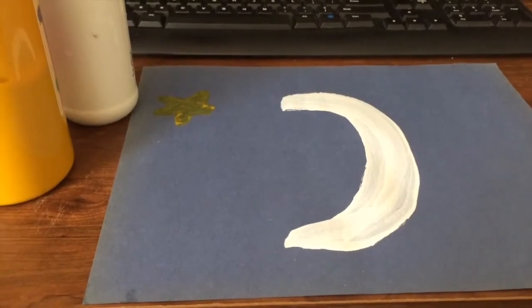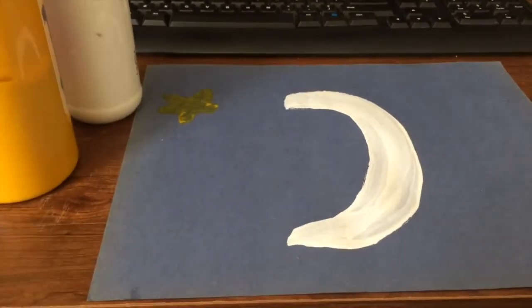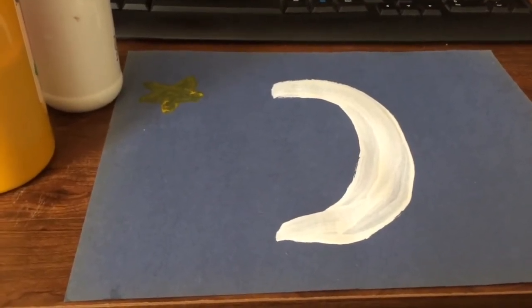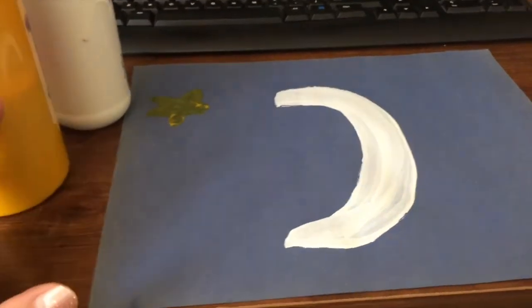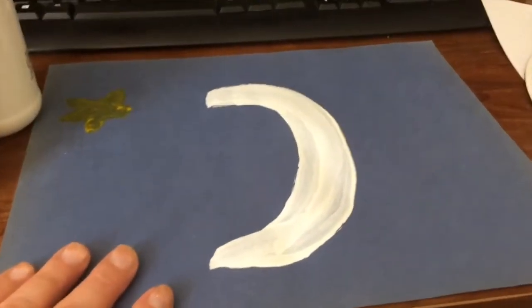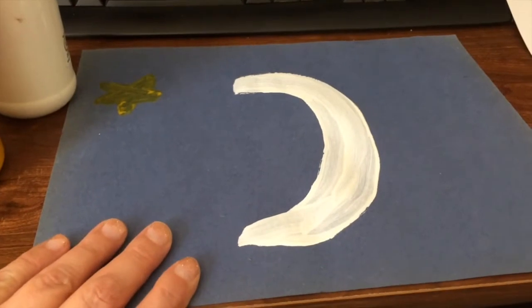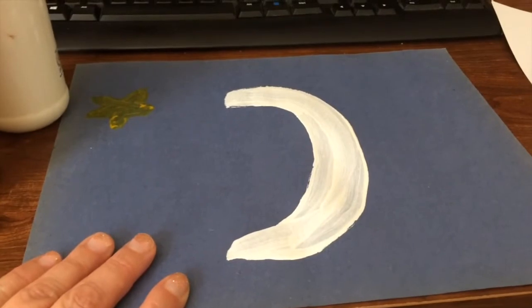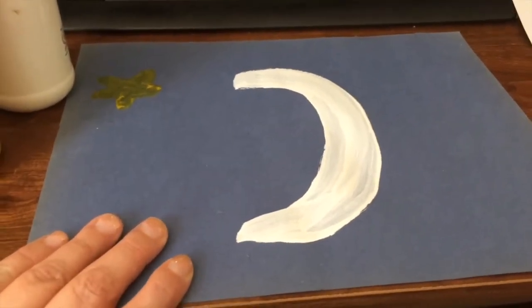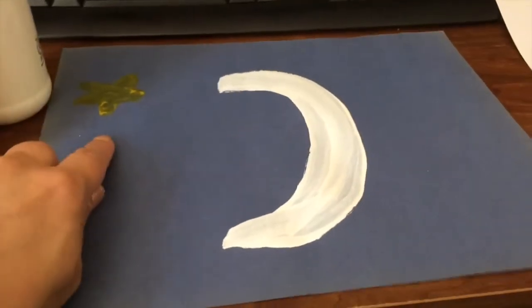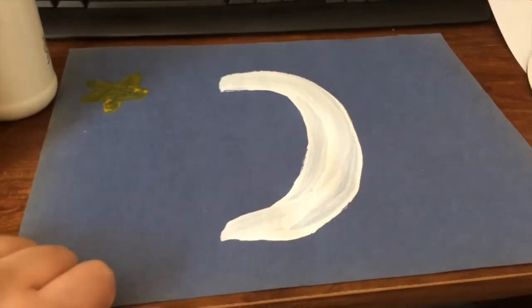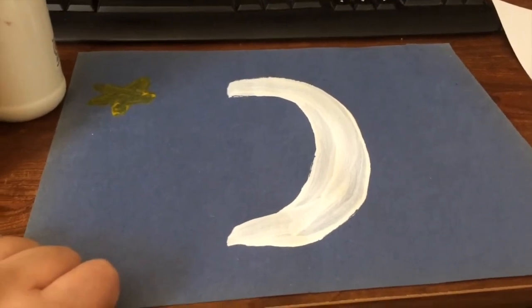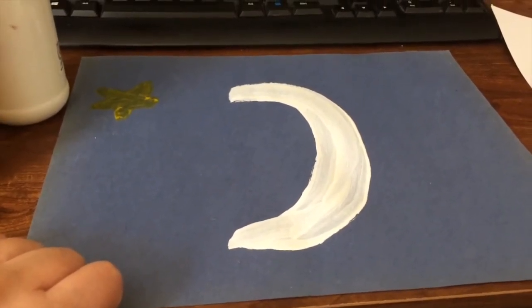My final activity for Papa Please Get the Moon for Me by Eric Carle is doing some painting. Find some dark blue construction paper, some white paint, some yellow paint, and paint the night sky with your favorite moon phase. Mine is the waxing crescent where it's starting to come back into the night sky where we can see it. Then I started making some stars. It's pretty neat to paint on dark paper instead of always using white. So have fun and I hope you enjoyed these activities. Bye-bye.